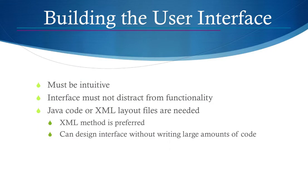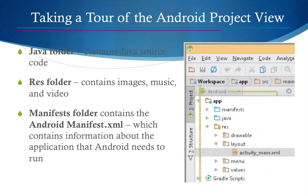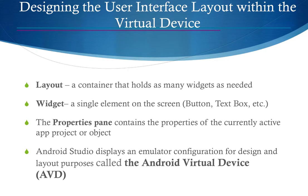The interface must not distract from functionality. Java code and XML layout files work together. The Java folder contains your Java source code, similar to the source folder in Eclipse or NetBeans. The res folder contains images, music, and video resources — placed in the drawable subfolder. We also discussed the AndroidManifest.xml, layout files, widgets such as buttons and text views, and the properties panel.